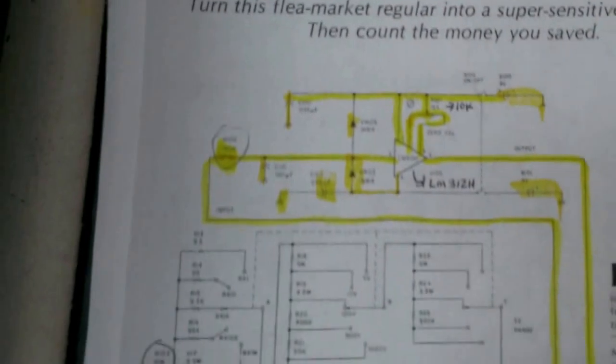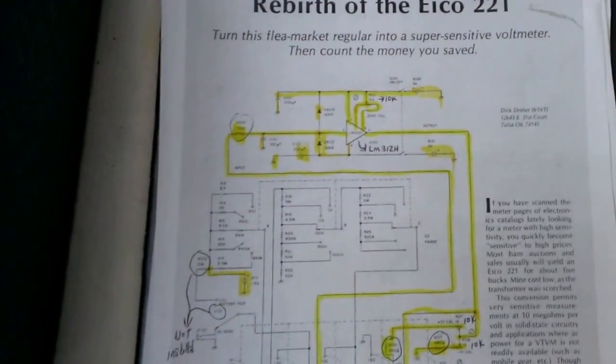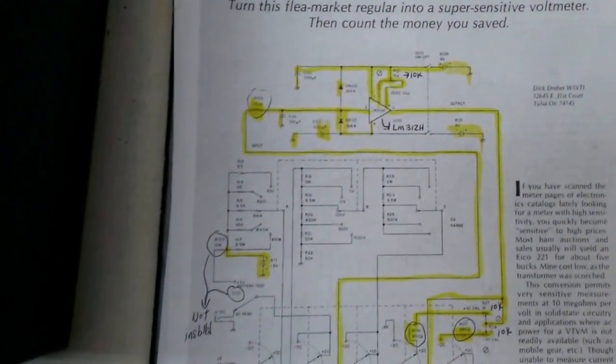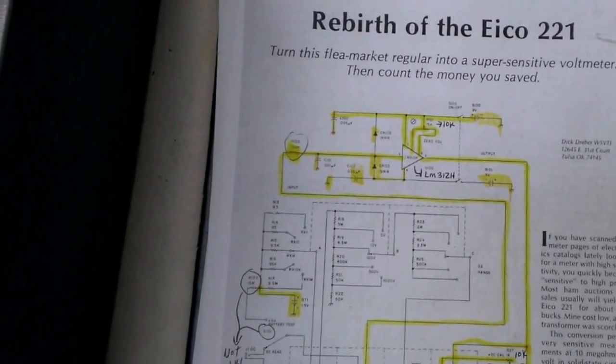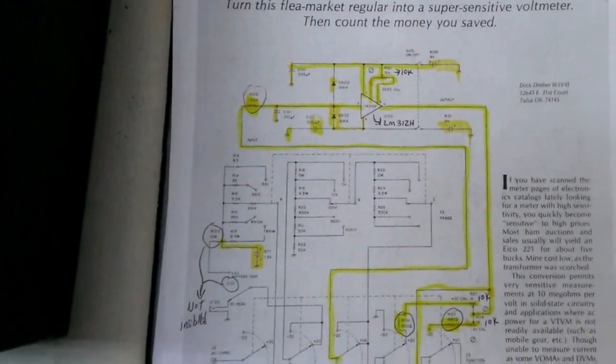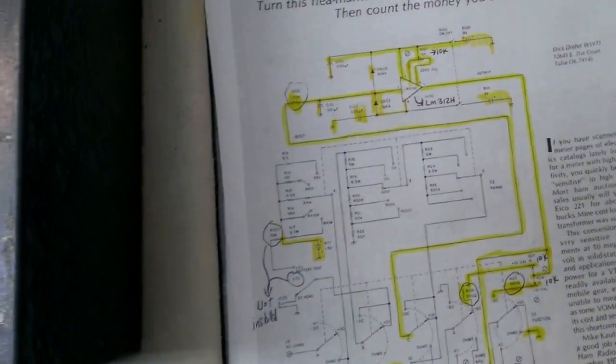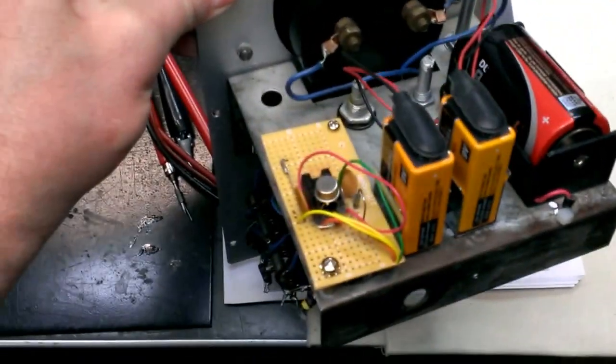And that's because I used a... The circuit calls for an LM310, an LM310H, and I did not have an LM310H. The 310H internally has pins 2 and 6, the output, connected together. The 312 that I used does not. So I put a jumper across the tube.